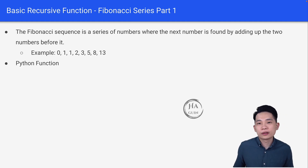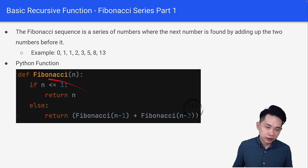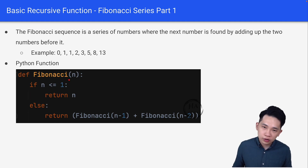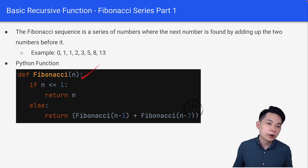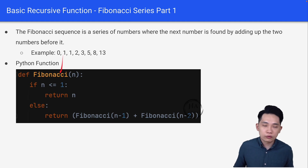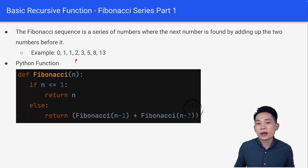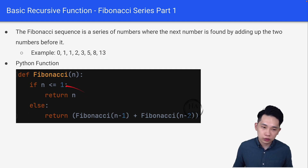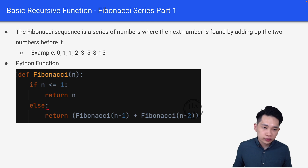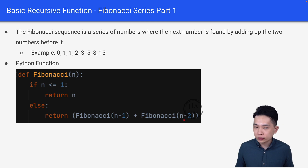Now let's look at the actual Python function. The function is defined as Fibonacci(N). This function returns a value based on the sequence — Fibonacci(0) returns 0, Fibonacci(1) returns 1, Fibonacci(2) returns 1, Fibonacci(3) returns 2, and so on. The code is: if N is less than or equal to 1, return N. Else, return Fibonacci(N minus 1) plus Fibonacci(N minus 2).